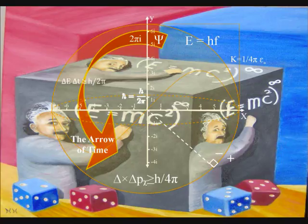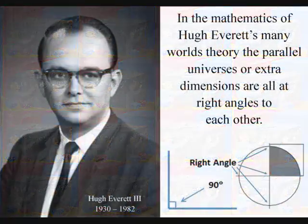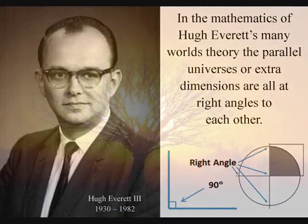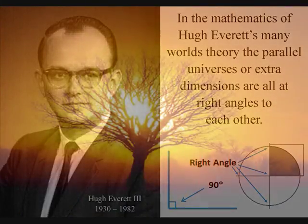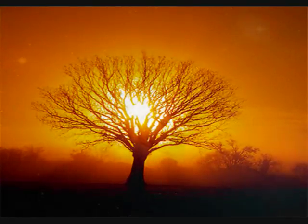The many worlds interpretation is one of the most logical ways of explaining the paradoxes of quantum physics. This interpretation is based on the mathematics of Hugh Everett. In his equations, each parallel world branches off at right angles to each other, similar to the branches of a tree.